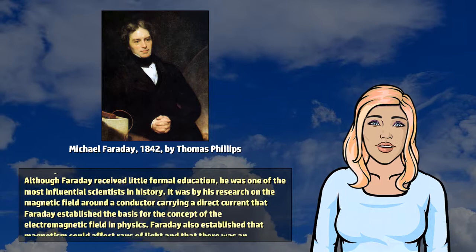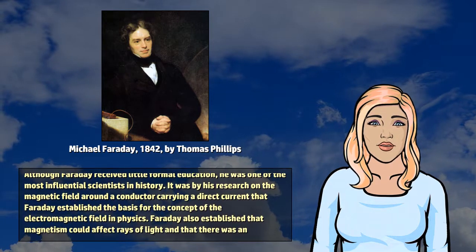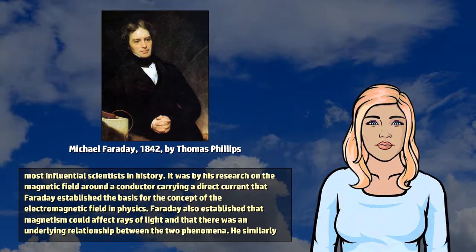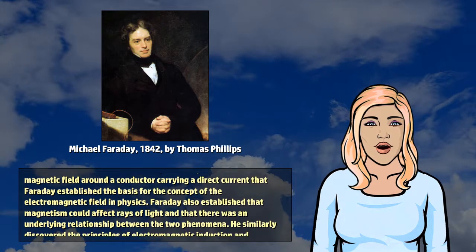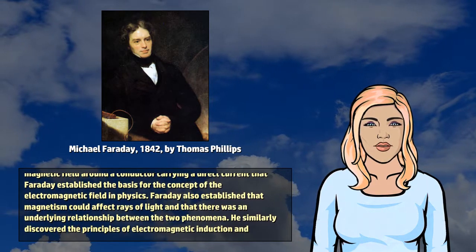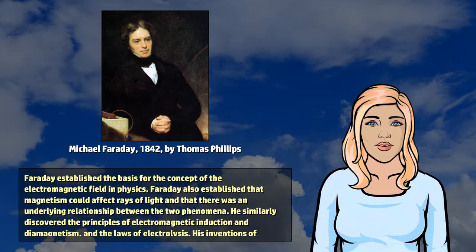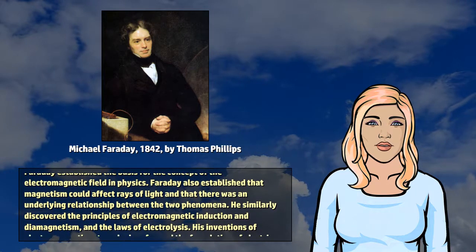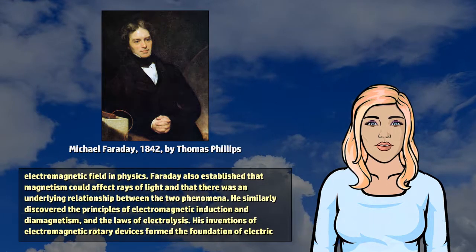It was by his research on the magnetic field around a conductor carrying a direct current that Faraday established the basis for the concept of the electromagnetic field in physics. Faraday also established that magnetism could affect rays of light and that there was an underlying relationship between the two phenomena.